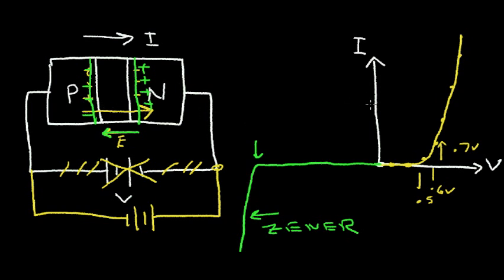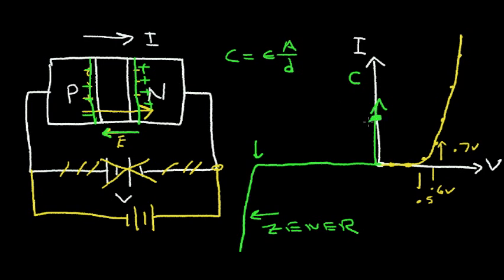Now, remember that as the width of the depletion region changes, the capacitance changes. So, let's also plot capacitance along with the current. If I have zero bias on the junction, I may have a capacitance here. As I increase the reverse voltage on the junction, the depletion region gets wider. So, in the equation for capacitance — epsilon times area divided by d — as I move down this curve, the capacitance is decreasing because the depletion width d is increasing. So, I get a nonlinear capacitance curve that looks something like this.